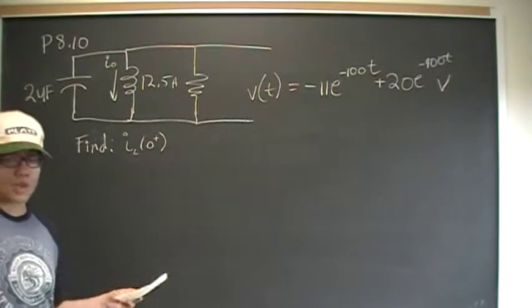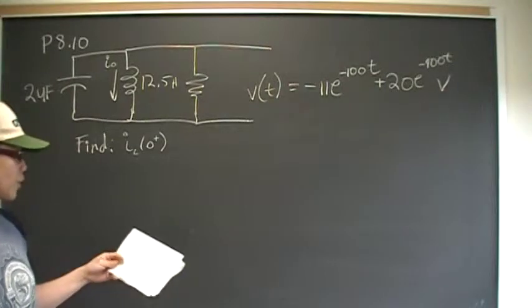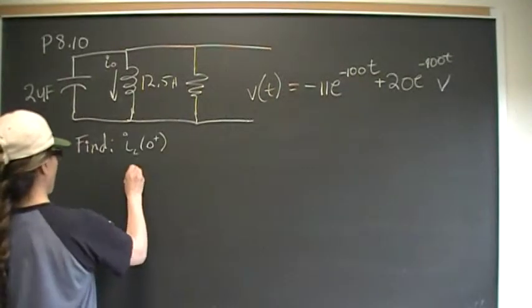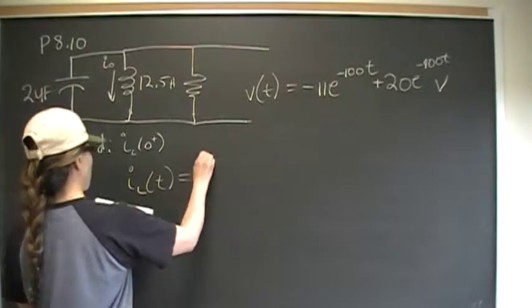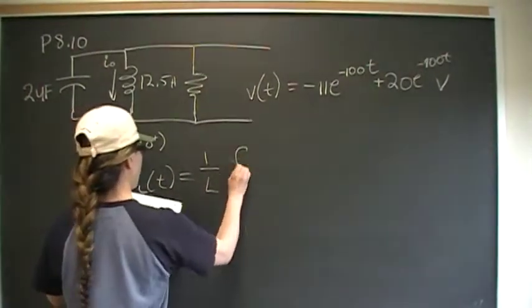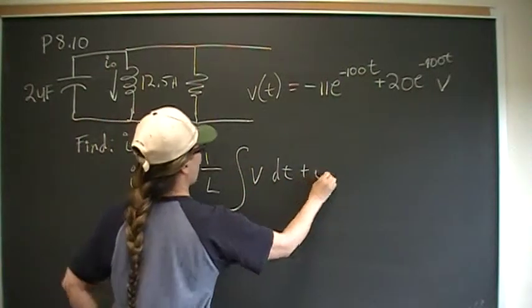If you go back to the end of chapter 6 in the summary, the inductor equation for current is I_L of T, the general equation is 1 over L, integral of VT dt plus I_0.